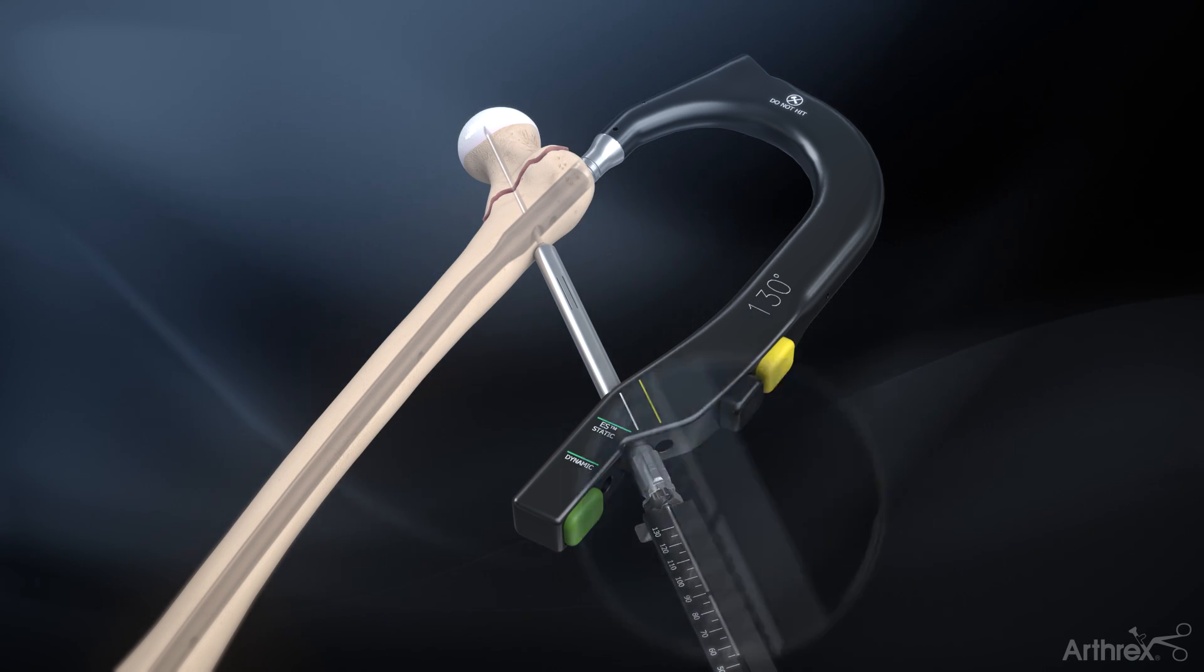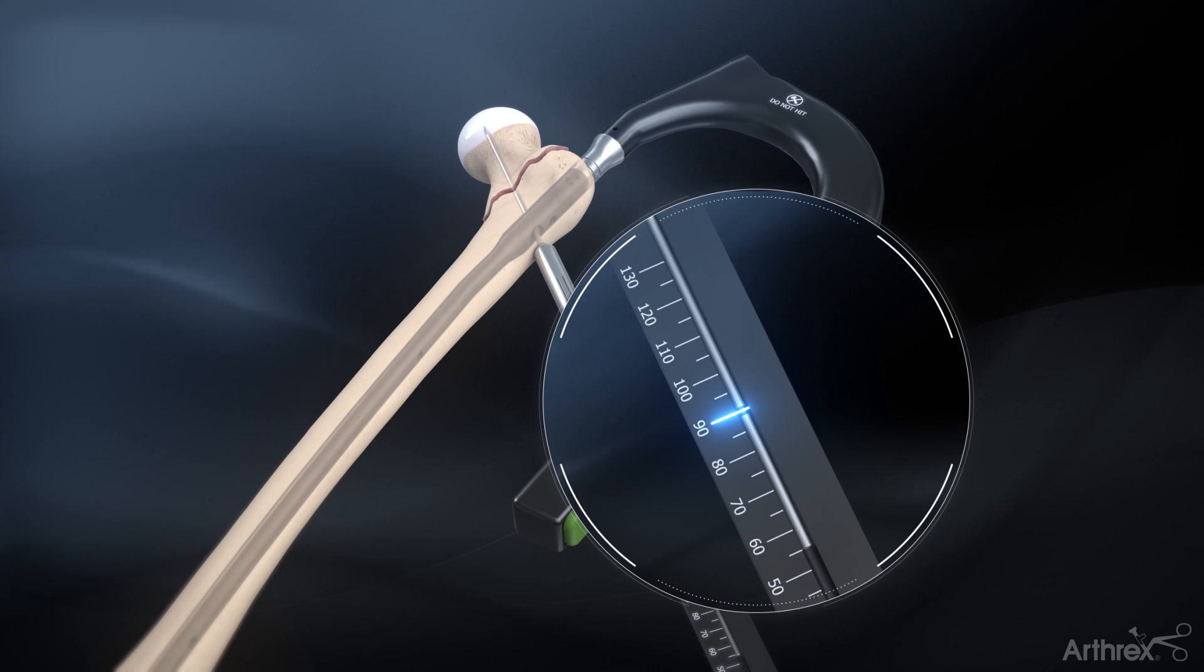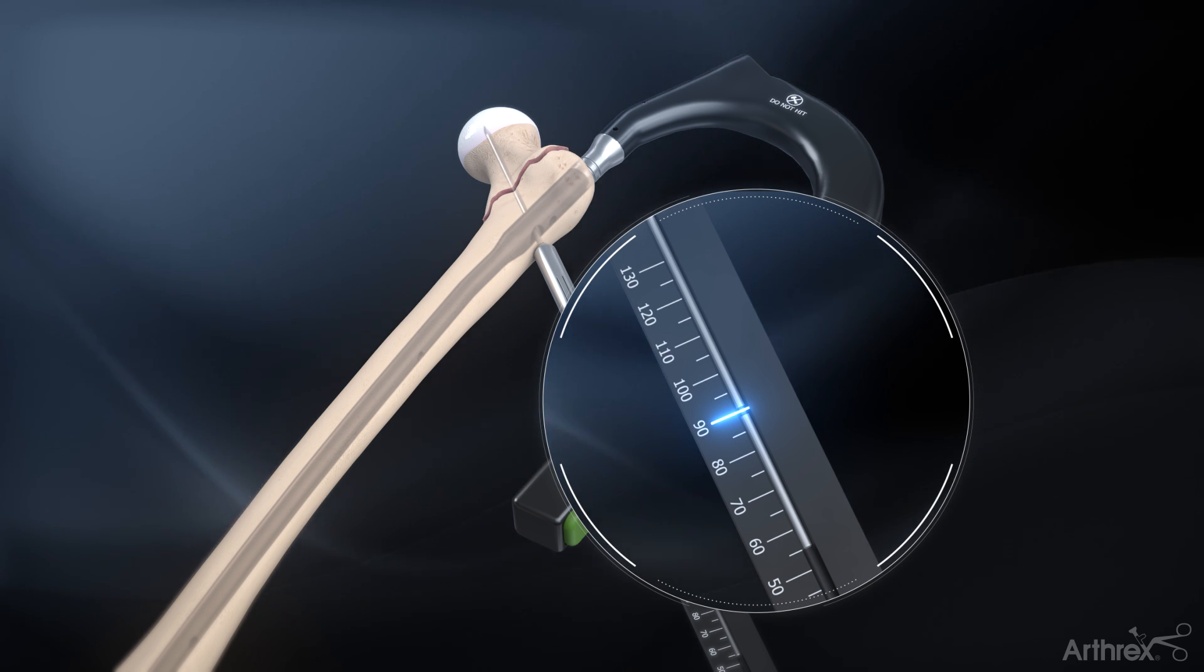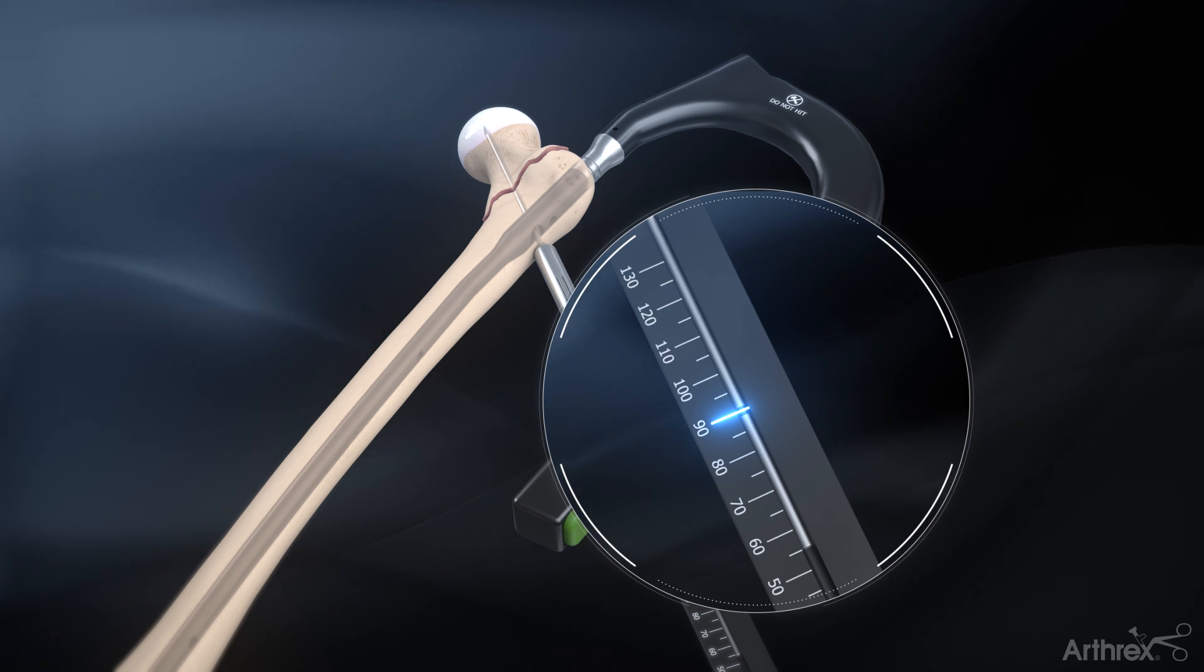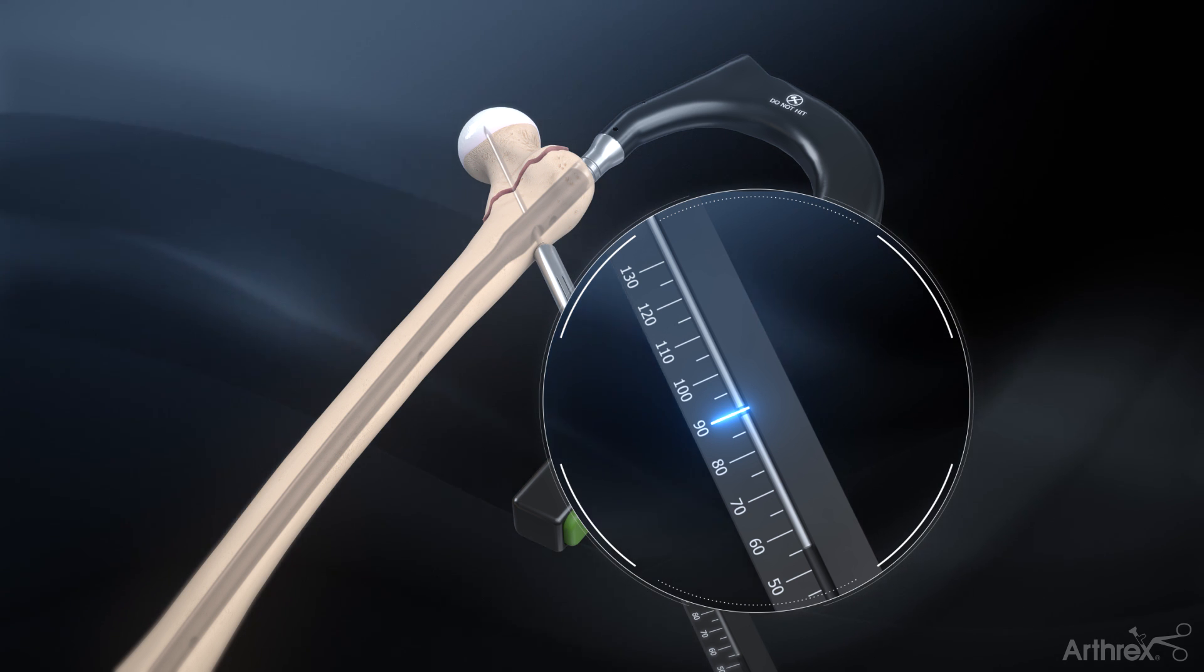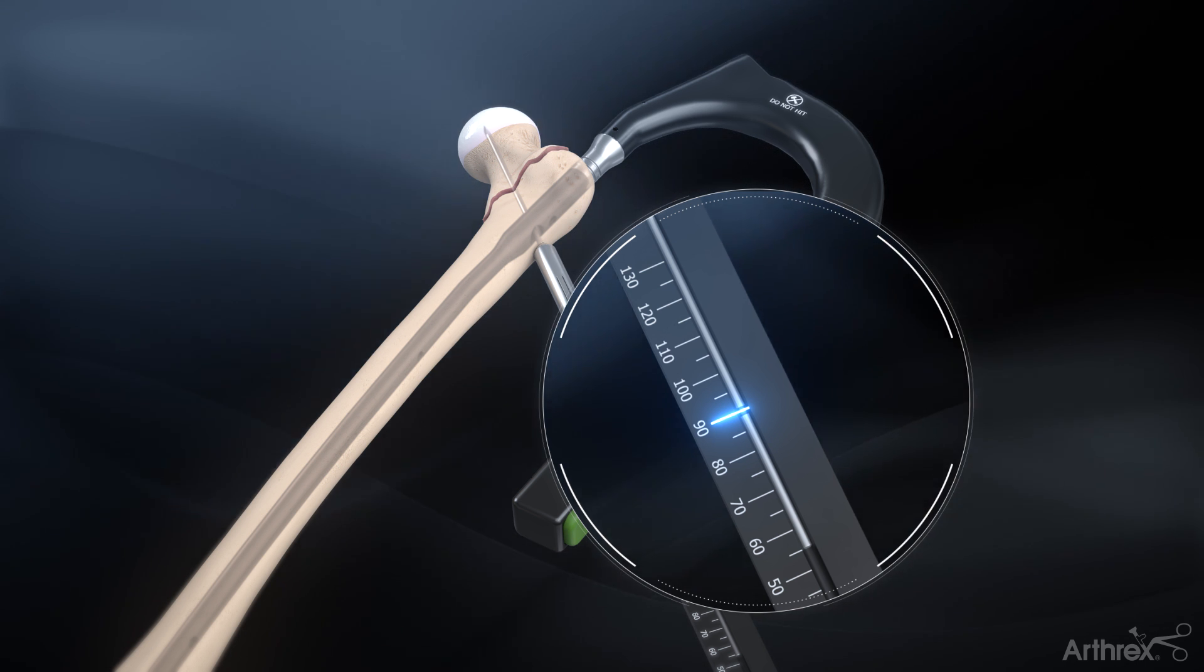Place the guide pin depth gauge with the flat end against the pin guide under the 3.2 mm lag screw guide pin and read the measurement. The guide pin is measured to the tip, so at least 5 to 10 mm should be subtracted from the measurement when determining drilling depth and lag screw length selection. Other factors such as fracture reduction, nail position, and anticipated fracture compression should be accounted for.